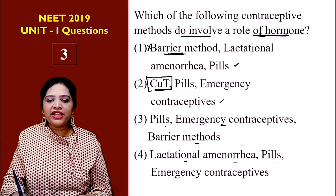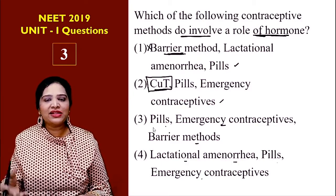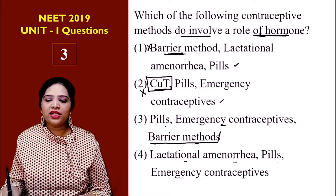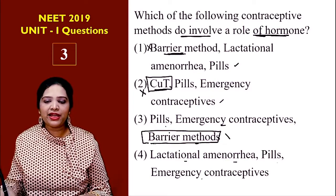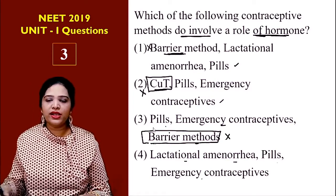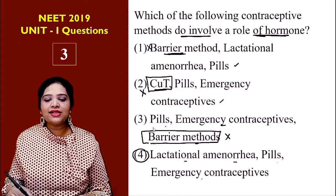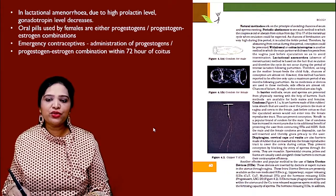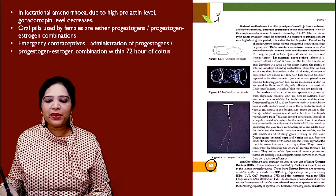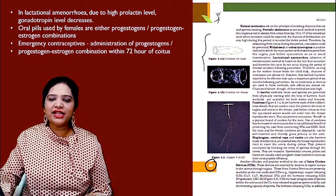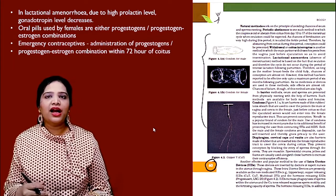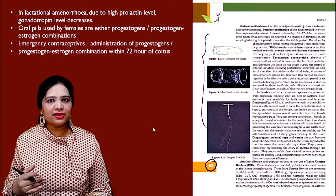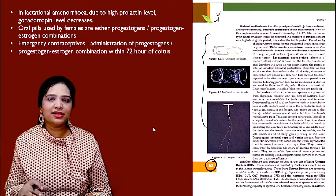Copper T is also like a physical method, so there is also no action of hormones there. The third option also includes barrier methods which do not have hormonal influence. This question is from the chapter Reproductive Health. If you see page number 60, a detailed description of the different methods of contraceptives and their mode of action is given. If we study all this clearly, we can answer correctly.